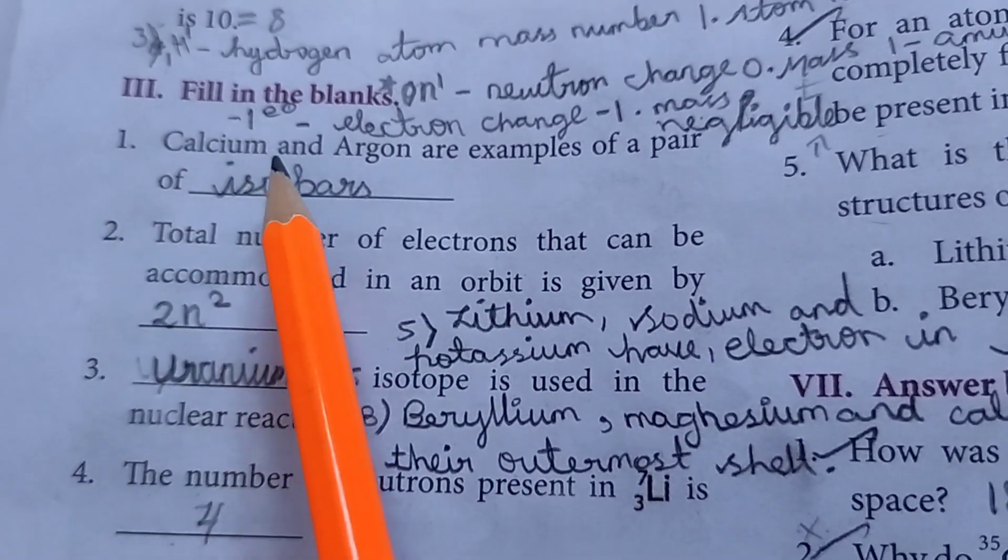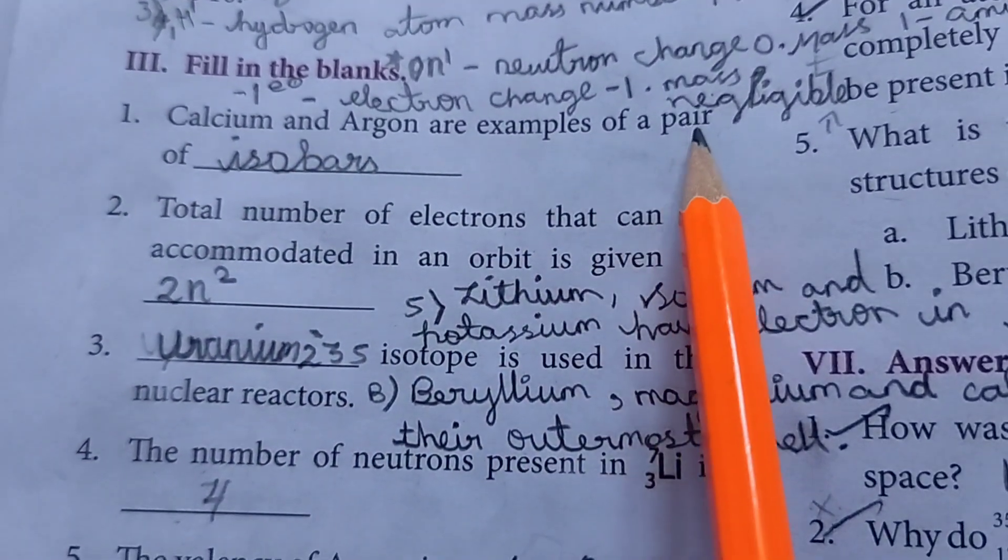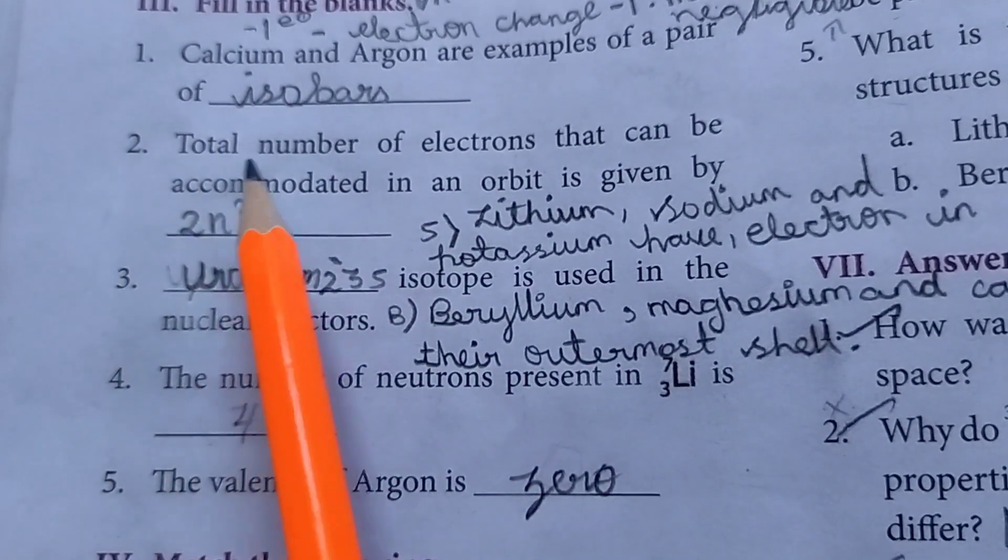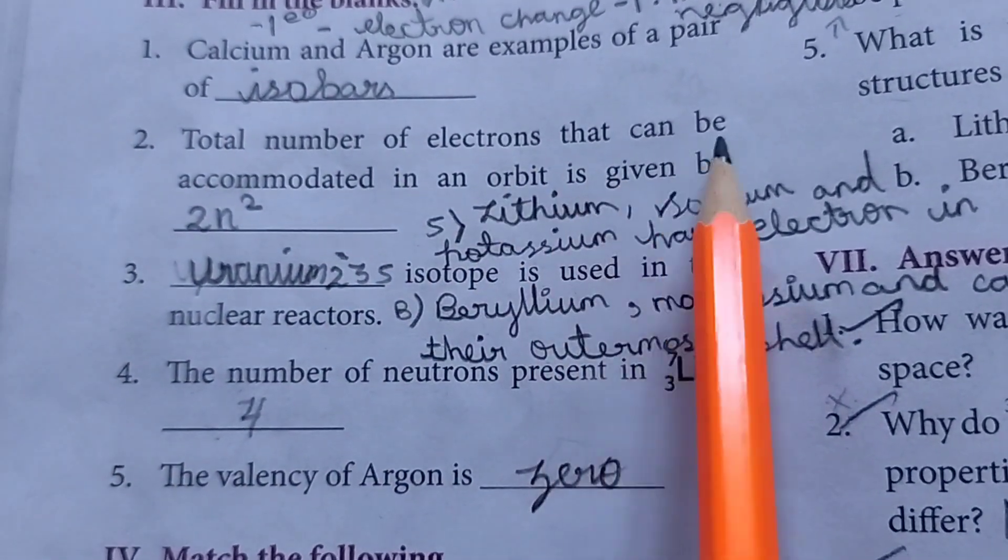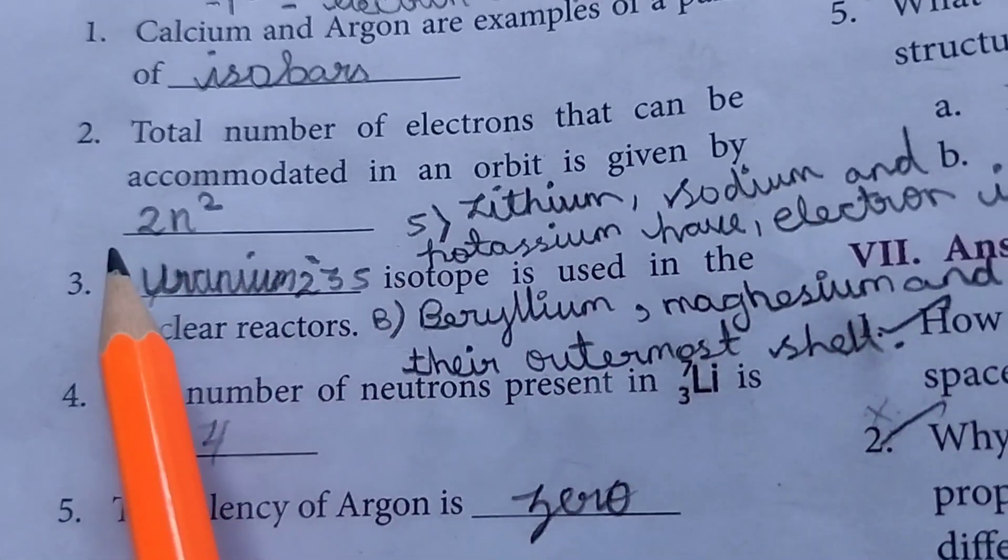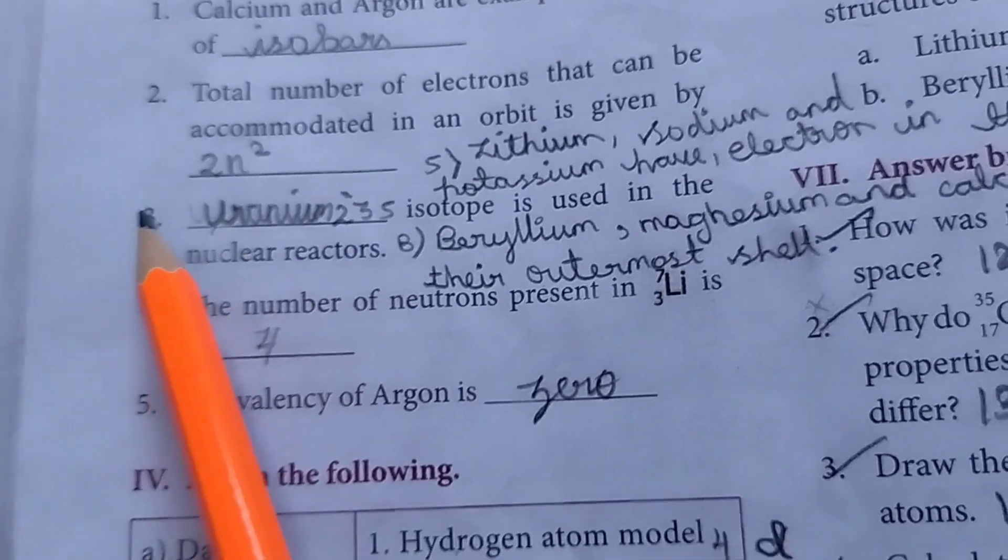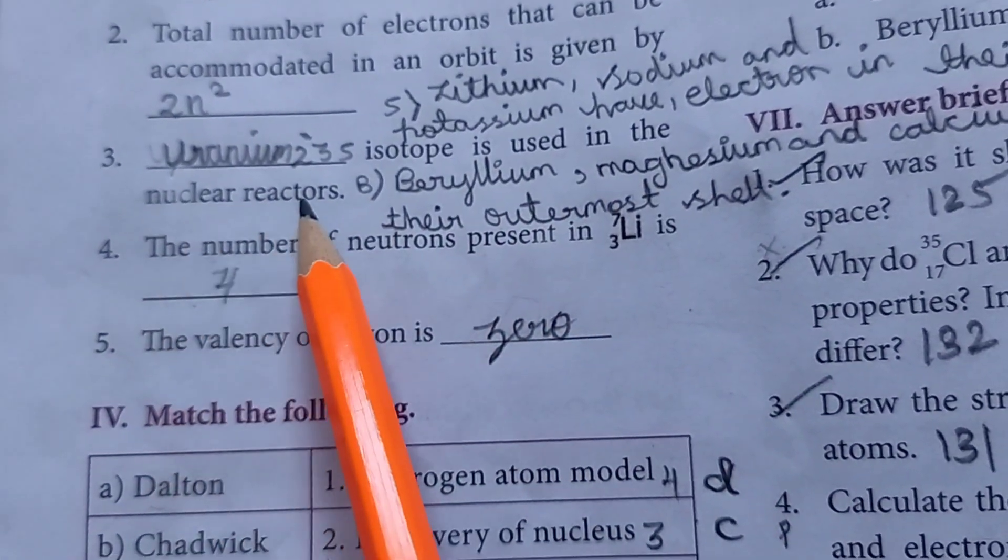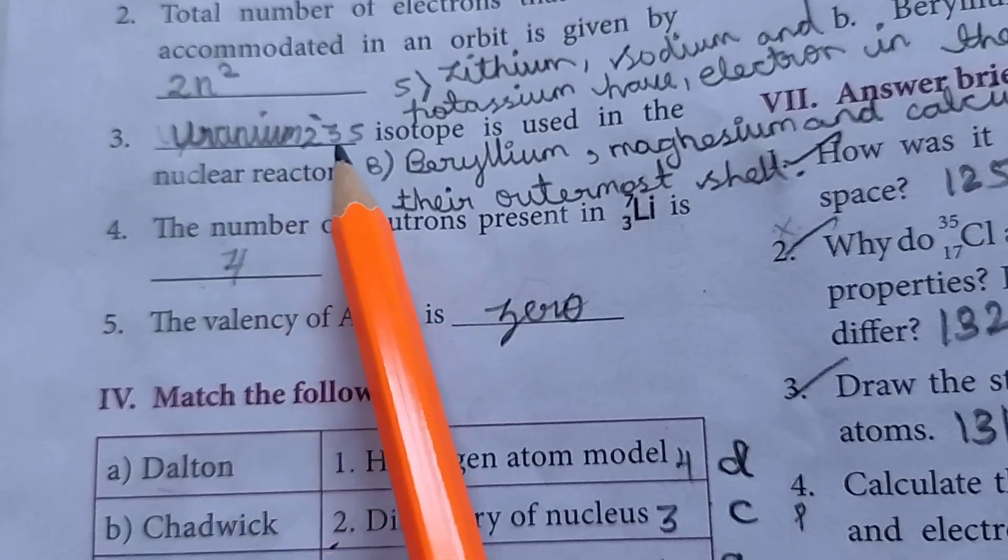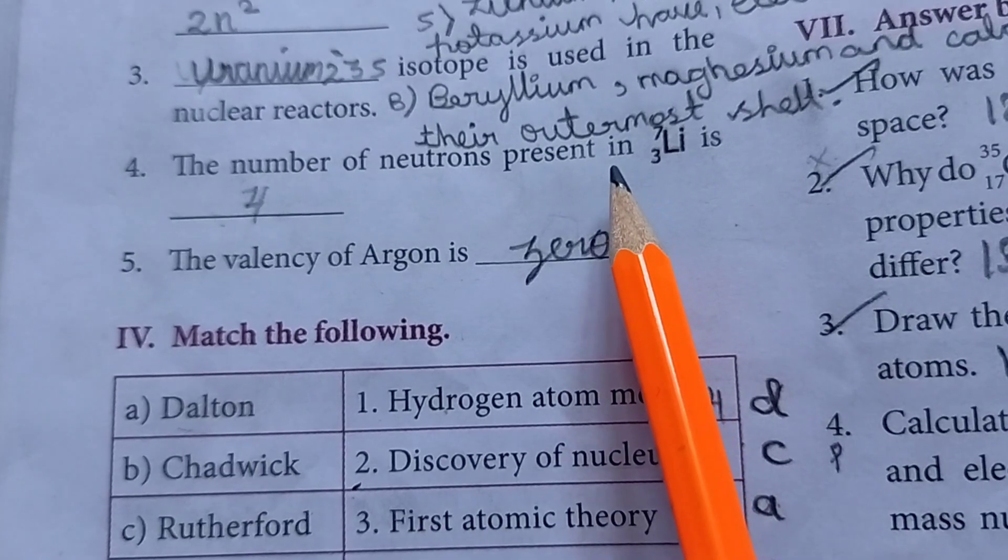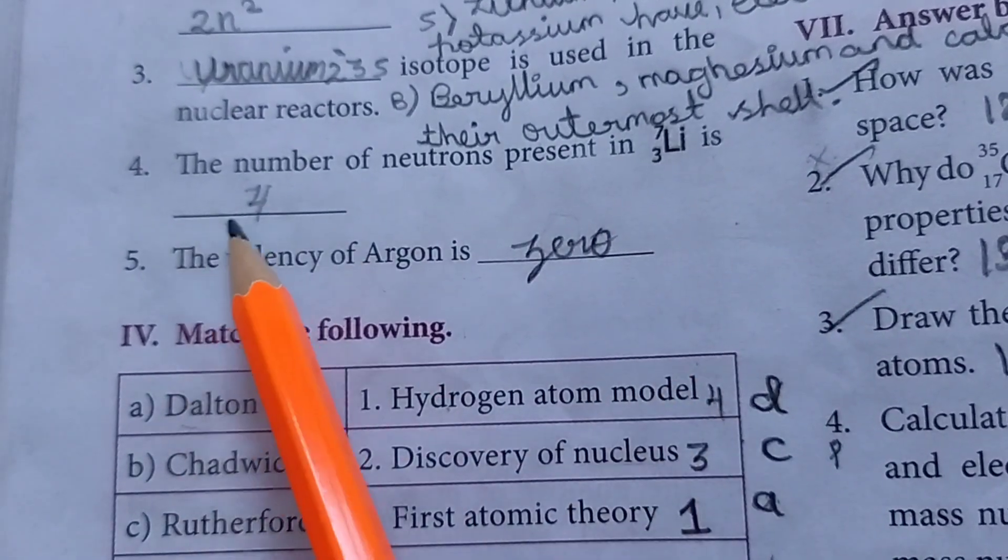First one. Calcium and argon are examples of a pair of isobars. Then second one. Total number of electrons that can be accommodated in an orbit is given by 2n squared. Third one. Das isotopes is used in the nuclear reactors. Uranium 235. Fourth one.